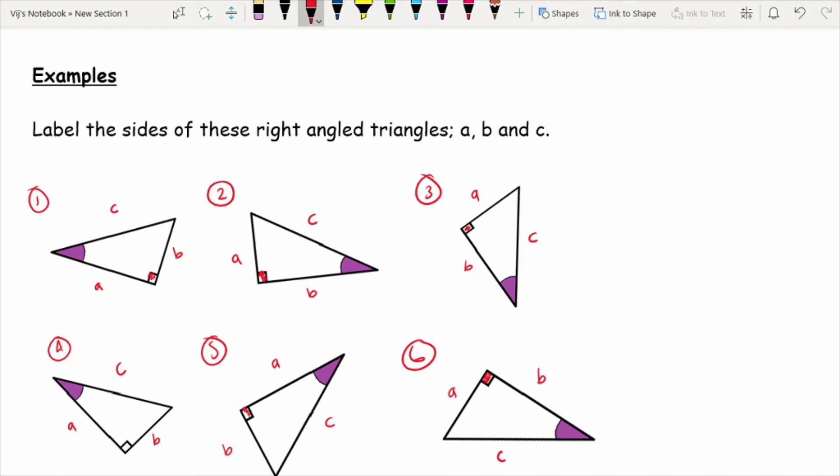Now, this in itself is not Pythagoras' theorem. So if you think to yourself, actually, this is not too bad, finally, it's really easy. Then this is just a starting point. I have to admit that if you struggle to label the sides of a right angle triangle, then the next stage when we actually apply Pythagoras' theorem is going to be incredibly difficult. And that's what we're going to lead on to next in the next video.